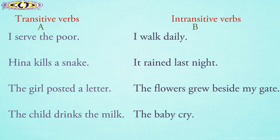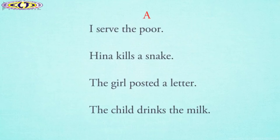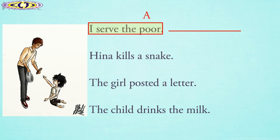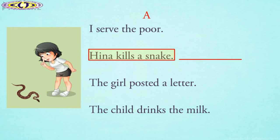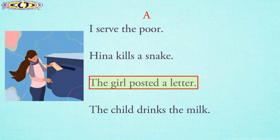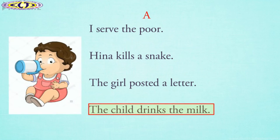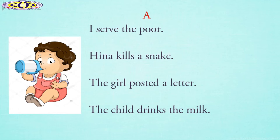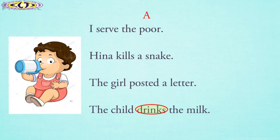Now let us have a look at these sentences in List A and repeat after me. I serve the poor. Hina kills a snake. The girl posted a letter. The child drinks the milk. Here we can see in List A that all the verbs used in these sentences — serve, kill, post, and drink — take an object to be acted upon. So these verbs are transitive verbs.